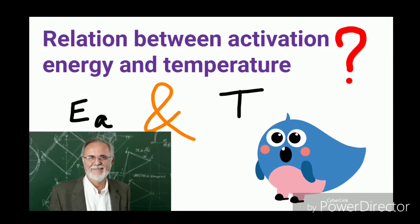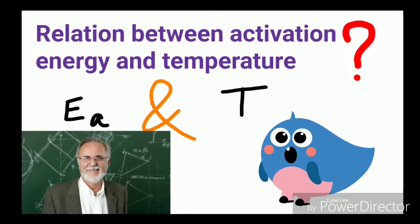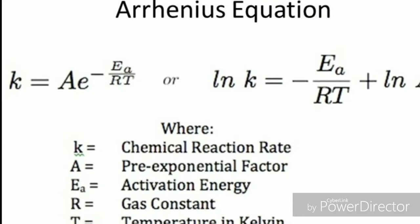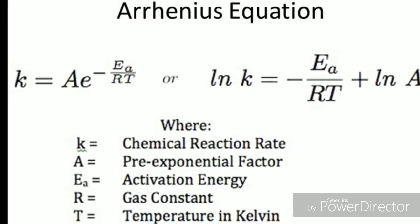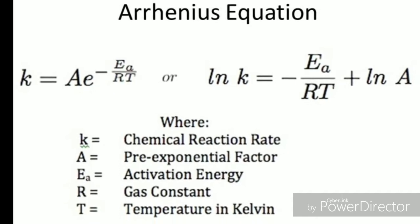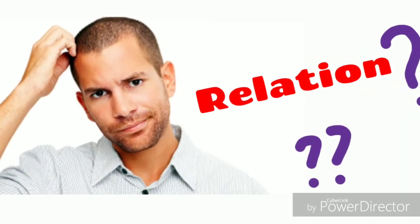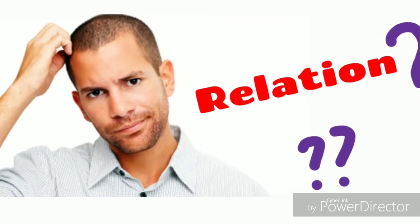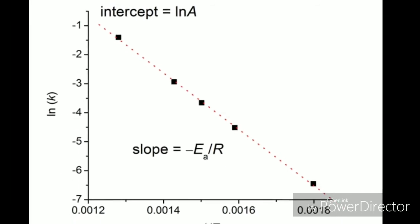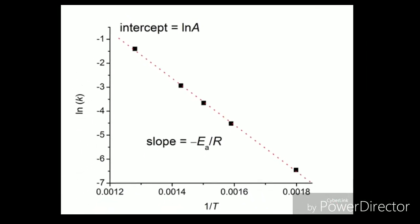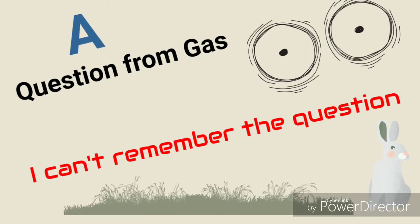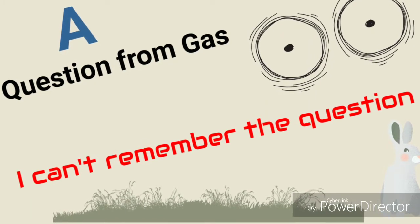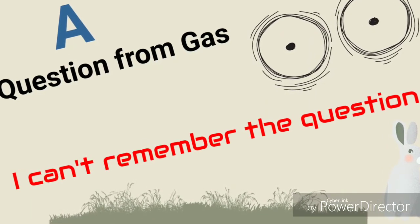After that, the next professor asked me to write the relation between activation energy and temperature. I wrote the Arrhenius equation on the blackboard and they asked me to explain the relations between them. I got confused at that time and couldn't answer, but now I think they wanted me to draw the graph. The first professor also asked me a question from the Maxwell-Boltzmann distribution law — I don't remember the exact question, sorry friends, but that question was easy.